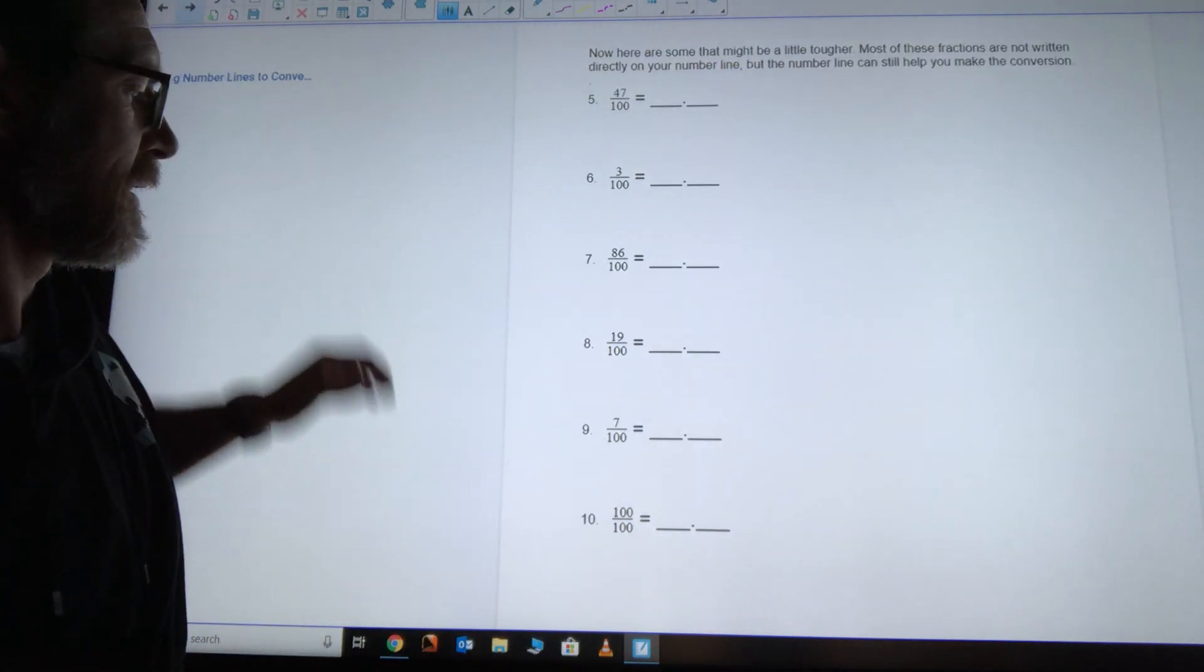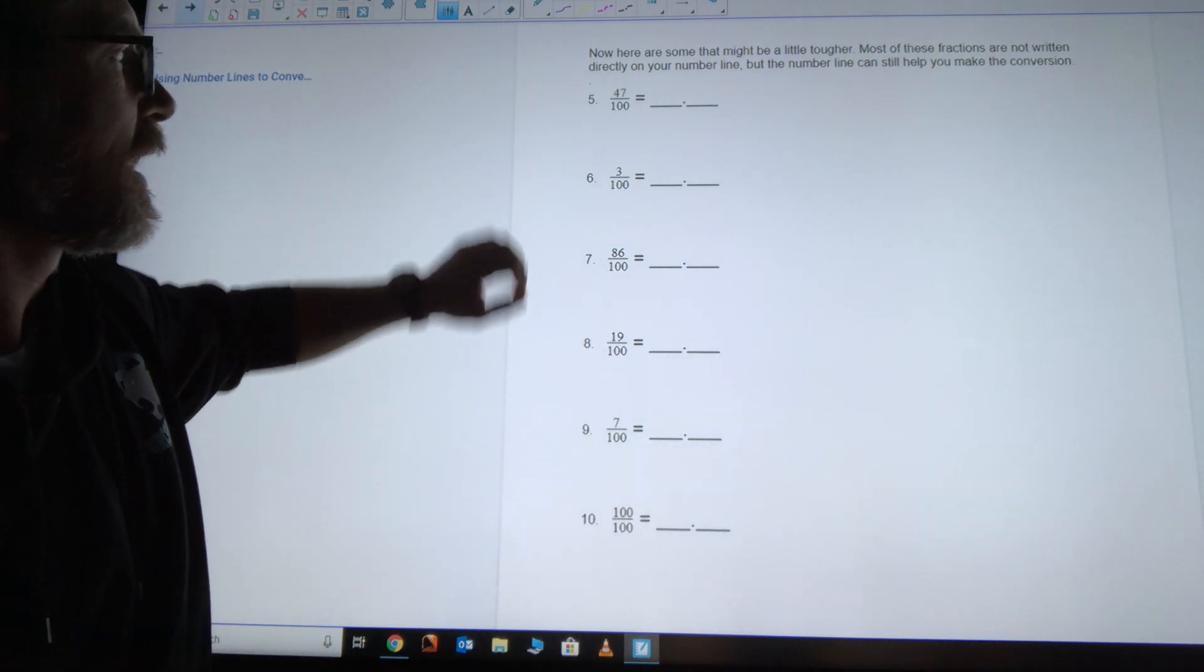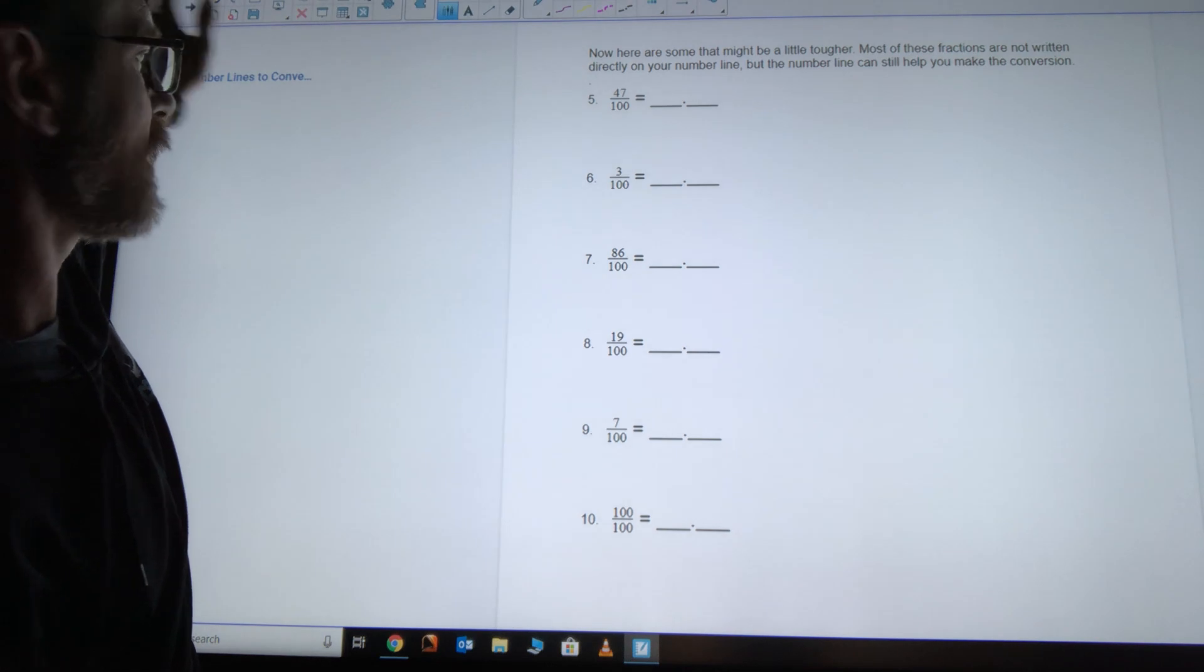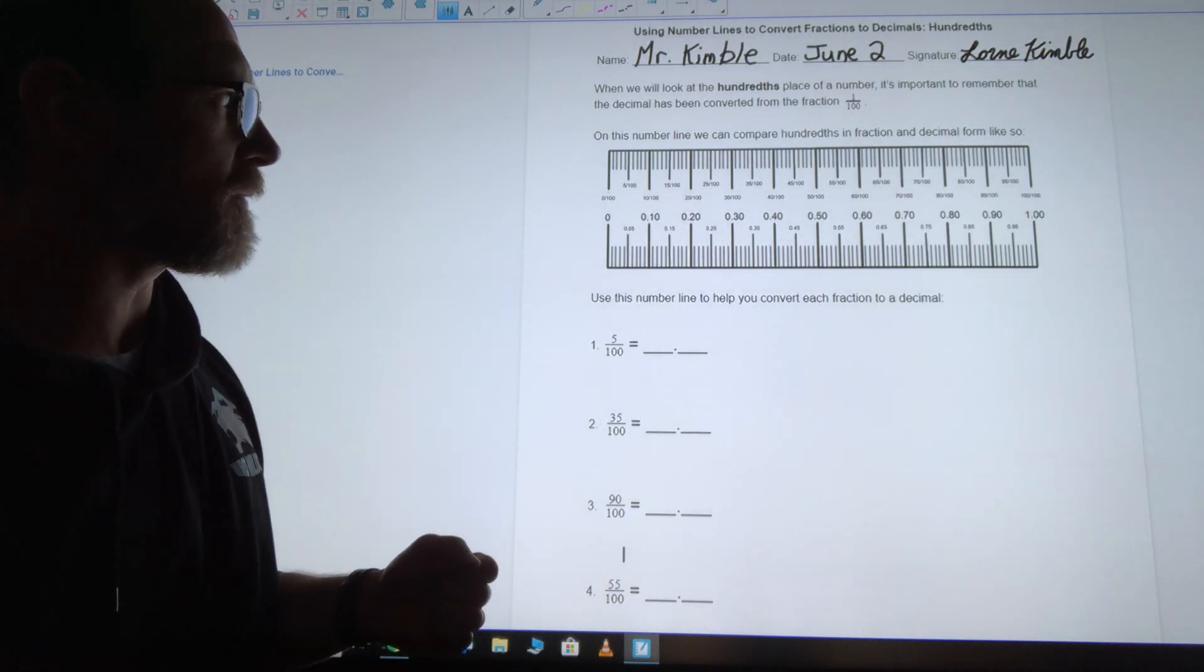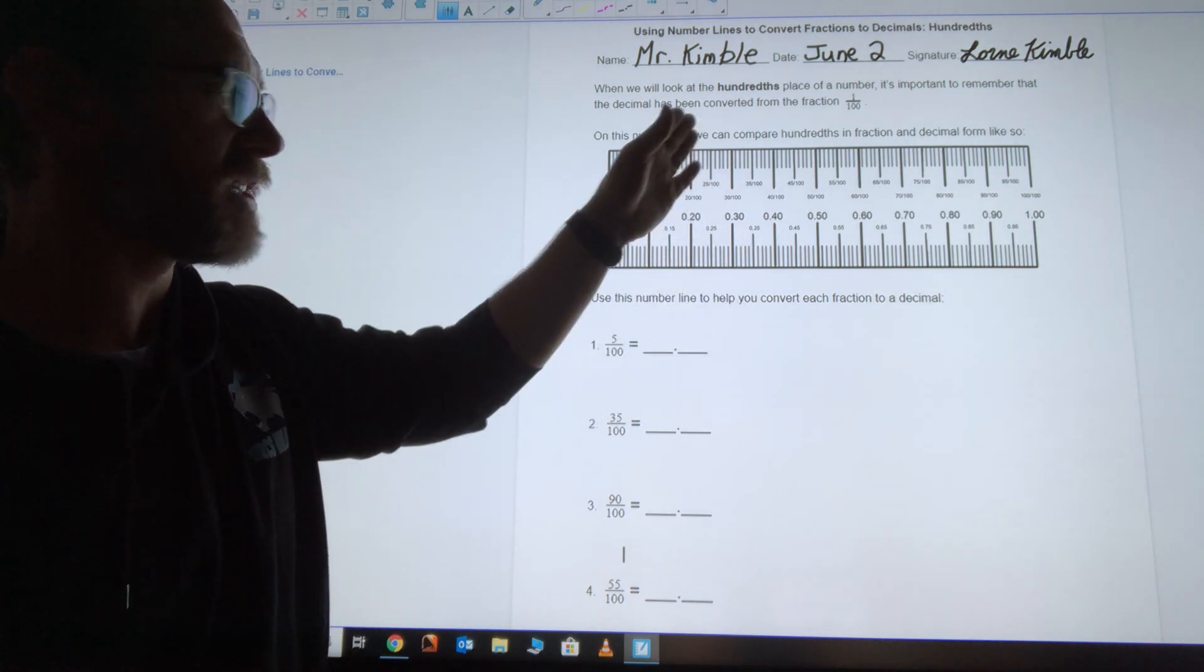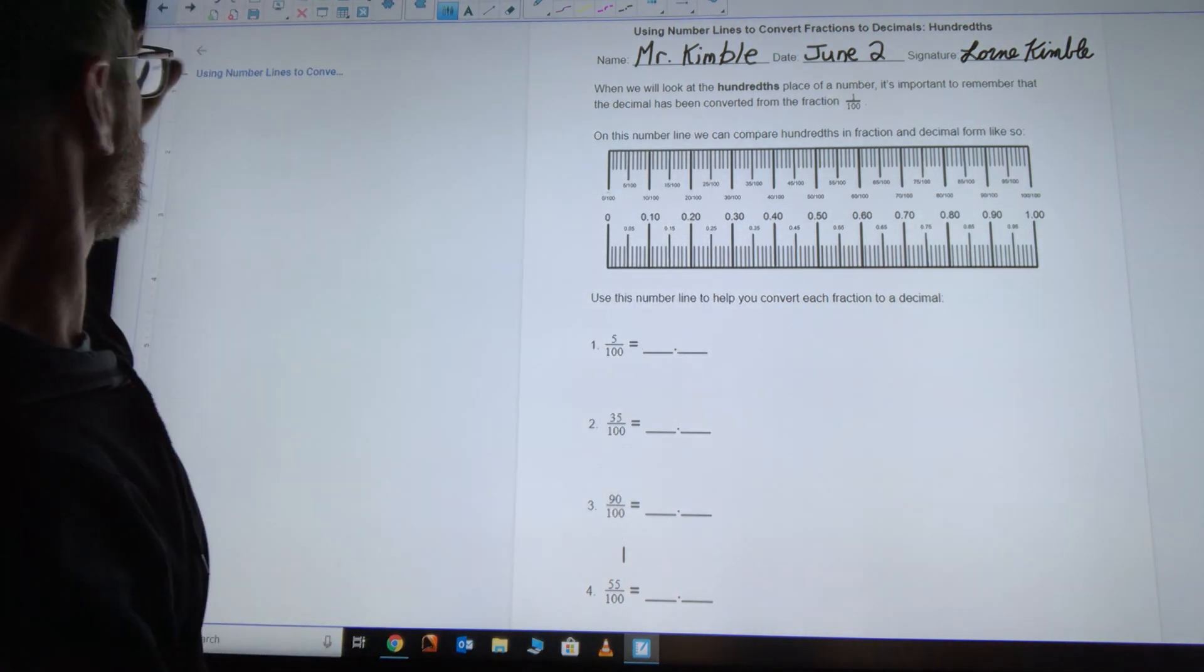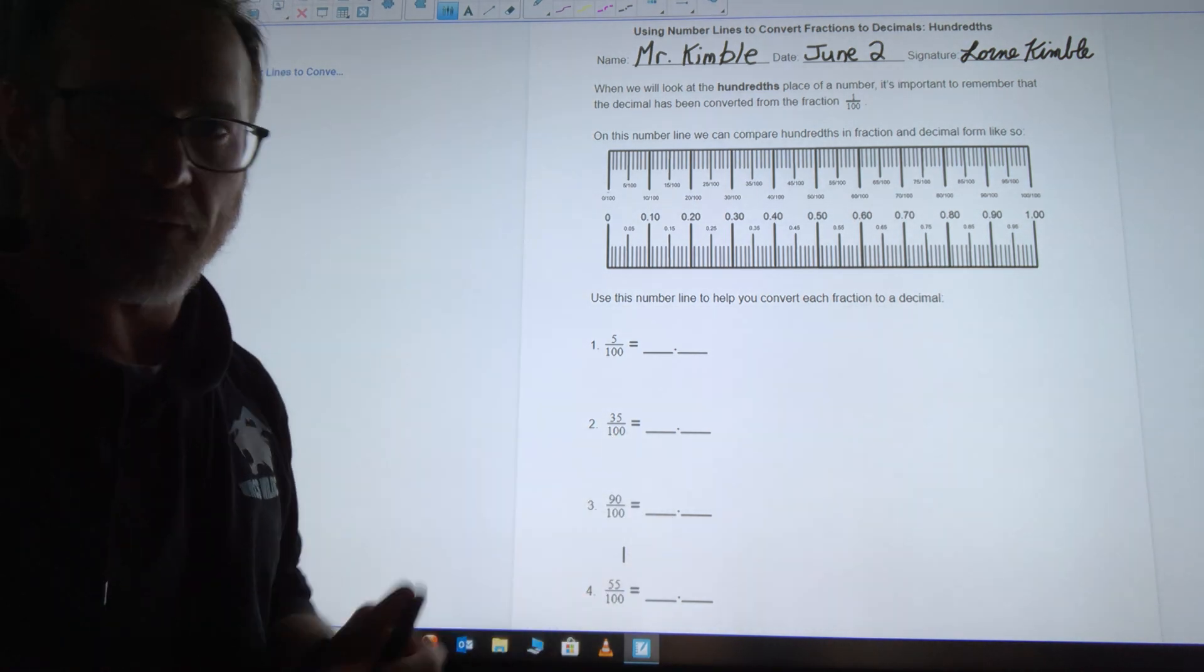So for the ones after that, all the way to number ten, five, six, seven, eight, and nine, it's not written directly on the number line that I gave you. It's going to be in between, but you'll have to find them and see where it lines up, or you can just use the knowledge that you've gained in the first four to do the final six.